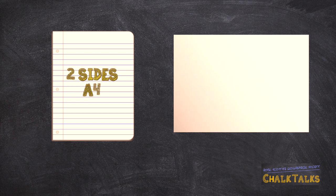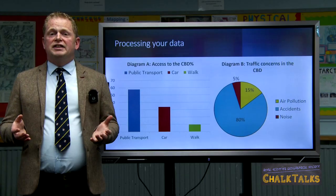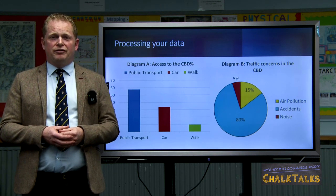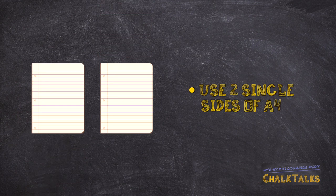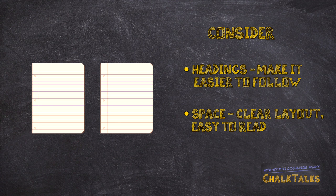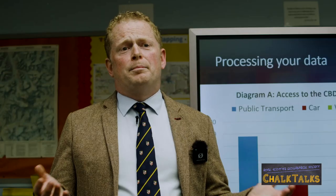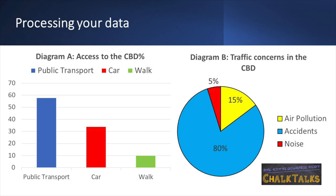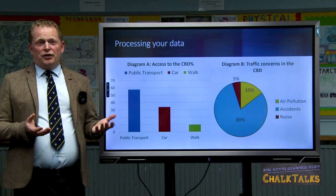You have a maximum of two sides of A4 or one single side of A3. There are no marks for the completion of processed information, but marks are awarded from your own analysis through your descriptions or explanations. I advise my classes that if you choose to process your information on A4, use two single sides as opposed to one back-to-back sheet — this avoids flipping the sheet during the assessment stage. Consider the use of headings and how much space your processed information should take up, as making it too small may make it too difficult to read. The processed information can be produced using a software package like a spreadsheet; if so, consider printing in colour, as default black-and-white settings can make graphs harder to read.